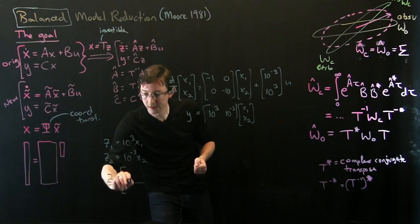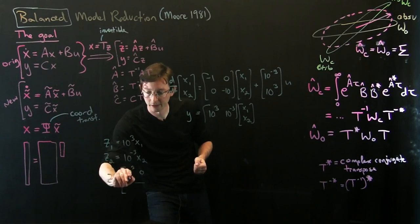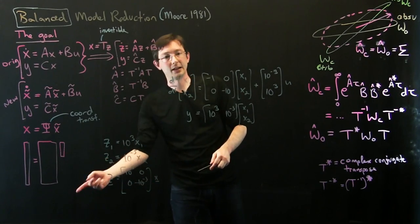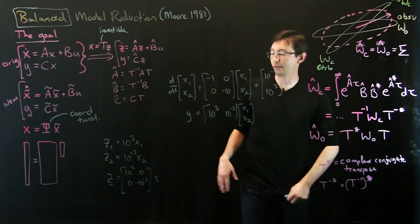I could say this is z equals 10 to the 3, 0, 0, 10 to the minus 3 times x, and I could invert that to get T. This is a T matrix. This is T inverse.